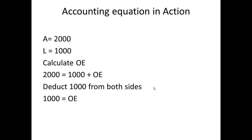Now, let's see the accounting equation in action with some numbers. Assets equals $2,000. Liabilities equals $1,000. Calculate the owner's equity. So we know assets equals liabilities plus owner's equity. So we know that $2,000 equals $1,000 plus owner's equity. We can deduct $1,000 from each side. And therefore, $1,000 equals owner's equity. Our owner's equity is $1,000.